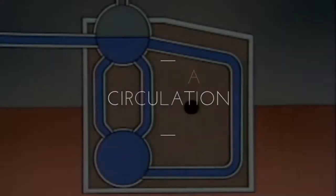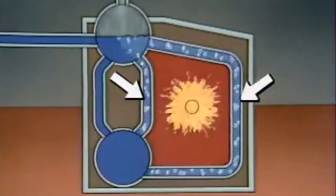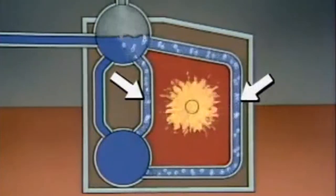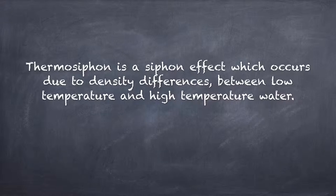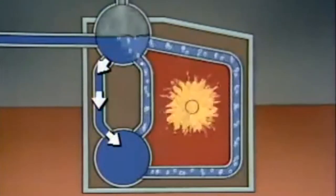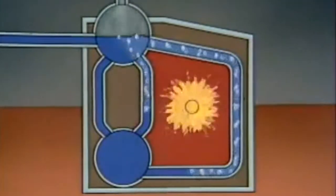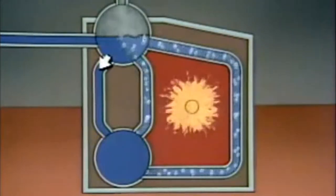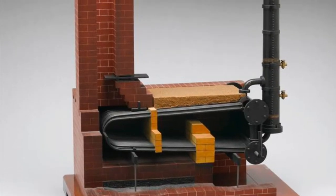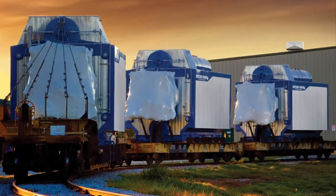Natural circulation boiler. Boilers with natural water circulation do not use external energy to circulate water inside the pipes. The water is naturally circulated due to a phenomenon called thermosiphon — a siphon effect which occurs due to density differences between low and high temperature water. High temperature water has relatively lower density, so hot water flows upward naturally and cold water moves downward through boiler pipes. Examples include Gurney boilers, Babcock and Wilcox boilers, and O-type boilers.